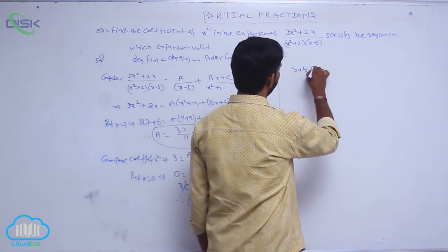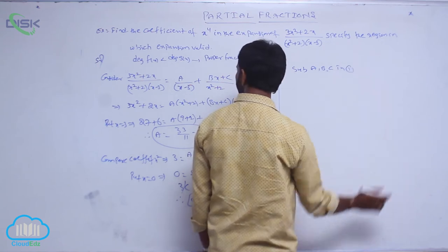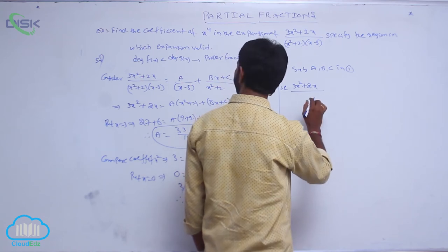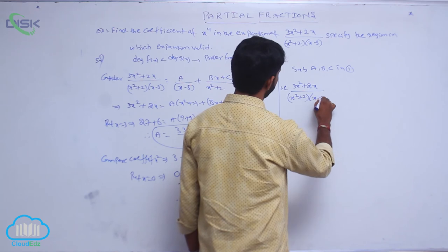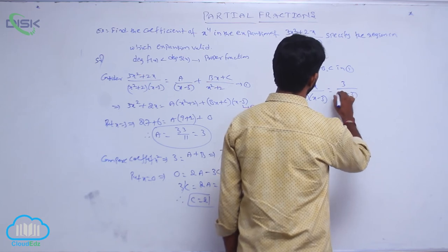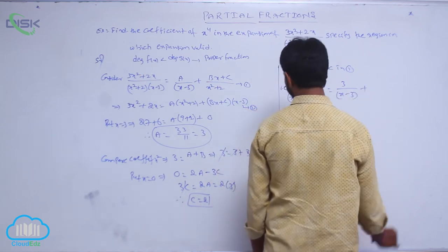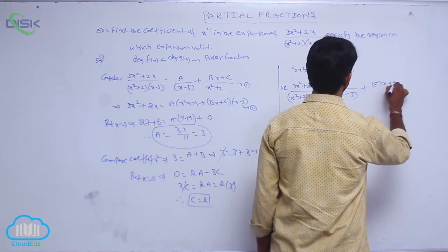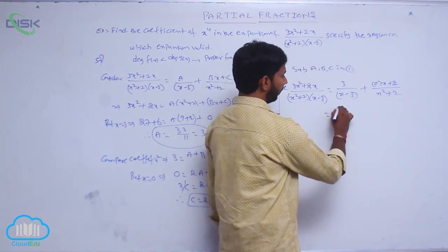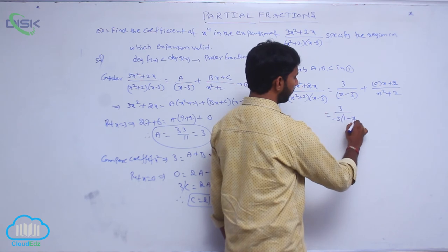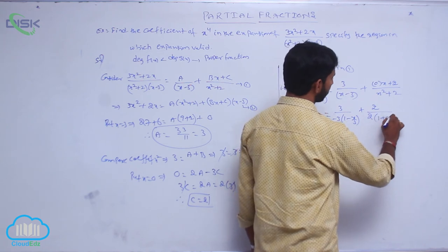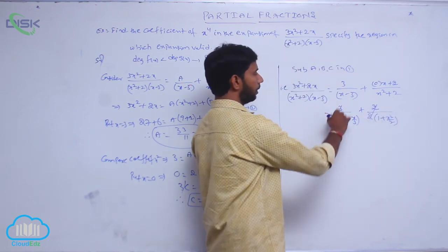Substitute A, B, C in condition number 1: (3x² + 2x) / [(x² + 2)(x - 3)] = 3/(x - 3) + (0·x + 2)/(x² + 2). Taking -3 and 2 as common factors from the denominators: = -1/(1 - x/3) + 1/(1 + x²/2), where the 2s and 3s cancel.